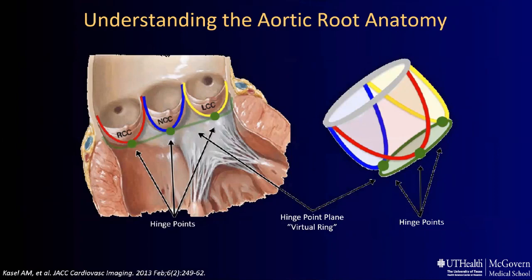To understand pre-procedural planning we need to understand aortic root anatomy. The aortic annulus refers to the tightest part of the aortic root — defined as a virtual ring with three anatomical anchor points at the nadir or hinge points of each aortic leaflet. This is different from the ventricular-arterial junction, which is located much higher than the true aortic annulus. If you undersize the valve with regards to the annulus, you can end up with paravalvular regurgitation and valve embolization; if you oversize, it can lead to AV block or aortic annular rupture. Transcatheter procedures are designed to be slightly oversized with regards to the annulus.